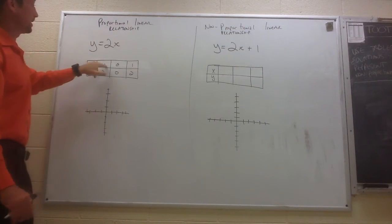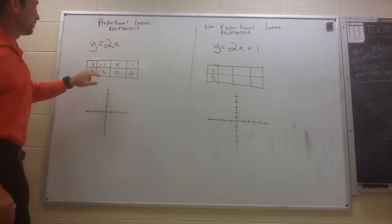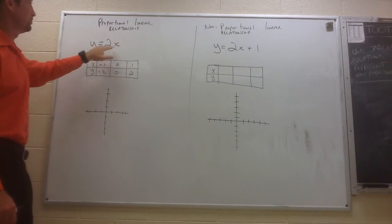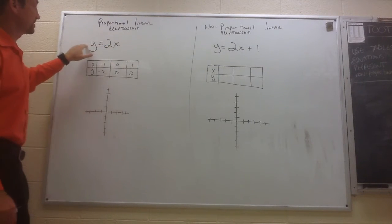So if we take the equation y equals 2x, if we plug in some inputs, I pick negative 1, 0, and 1. When I plug in a negative 1 for x, y becomes negative 2. 2 times negative 1 is negative 2. When we plug in 0 for x, 2 times 0 is 0.